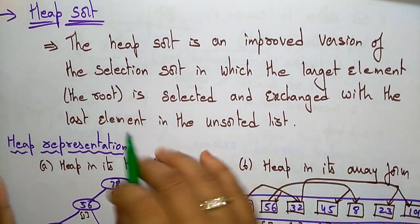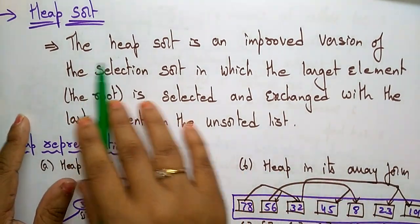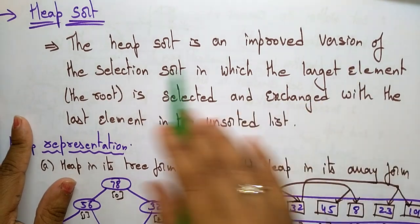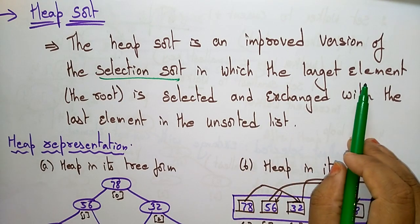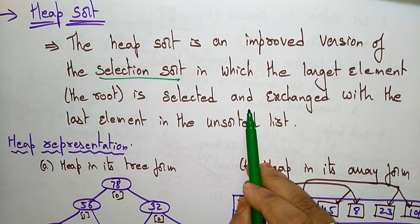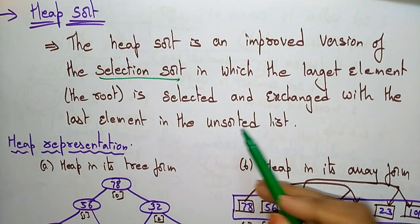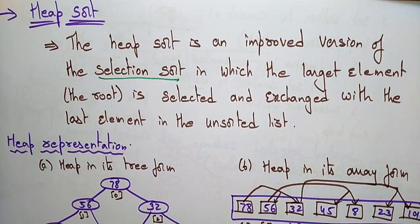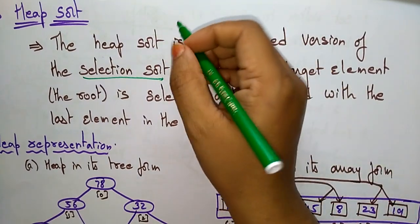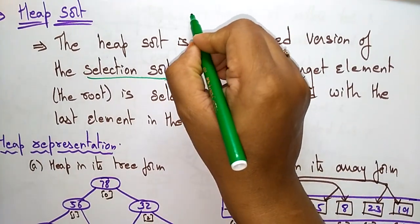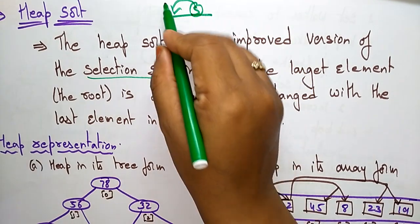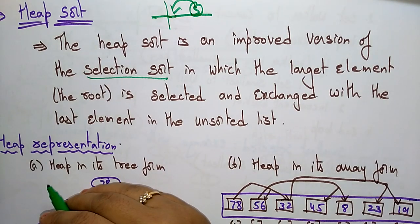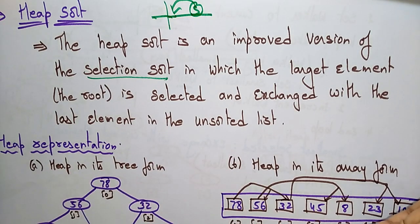Heap sort is a selection sort algorithm. It is an improved version of selection sort — an improved version of that straight selection sort — in which the largest element, that is the root, is selected and exchanged with the last element in the unsorted list. Whereas in straight selection sort, the smallest element is exchanged with the starting element of the unsorted list.